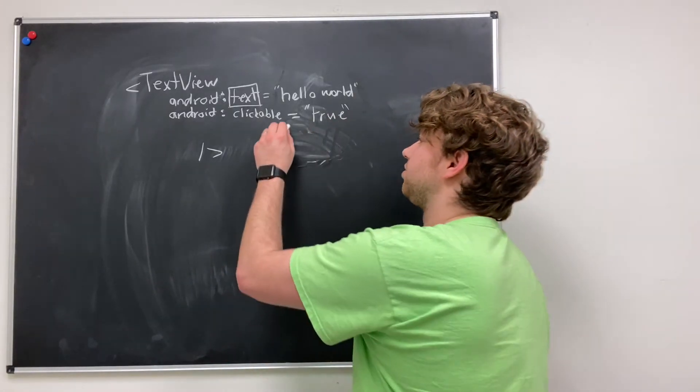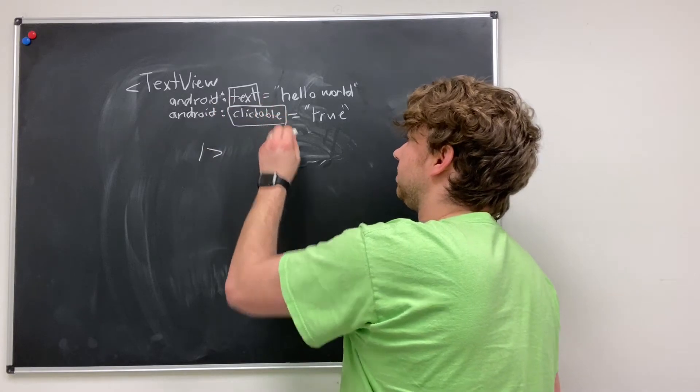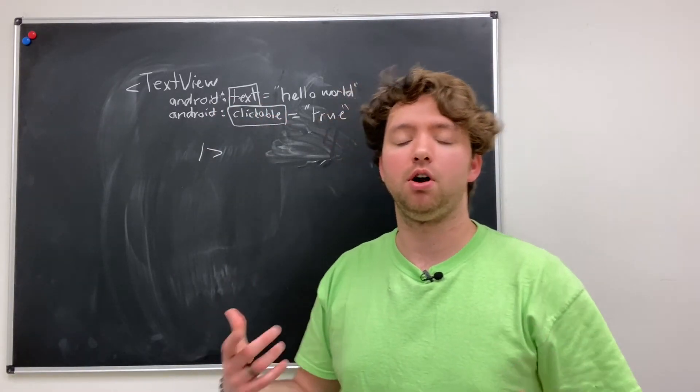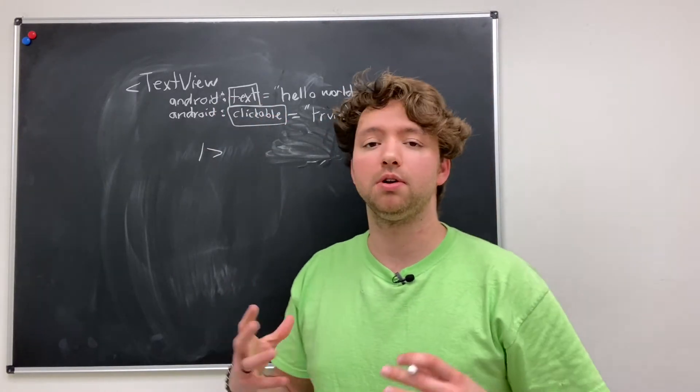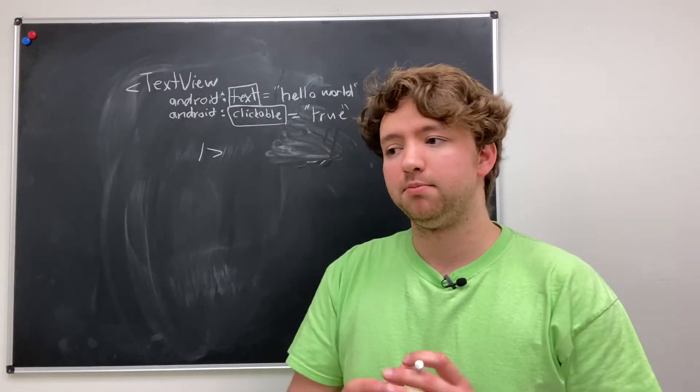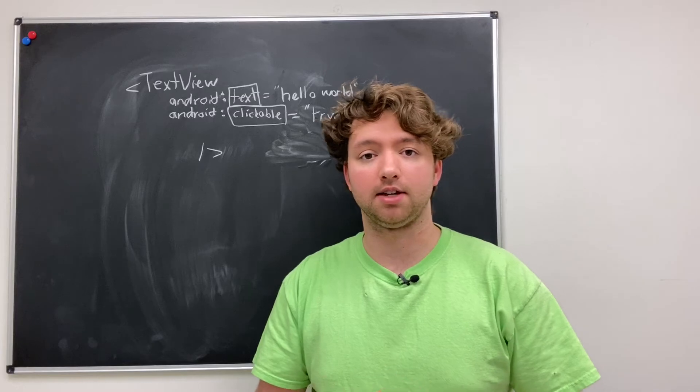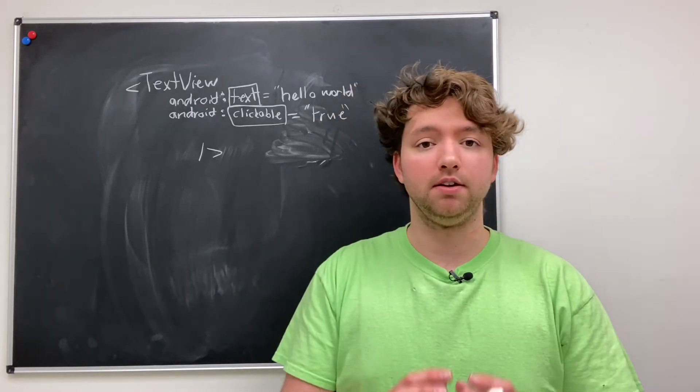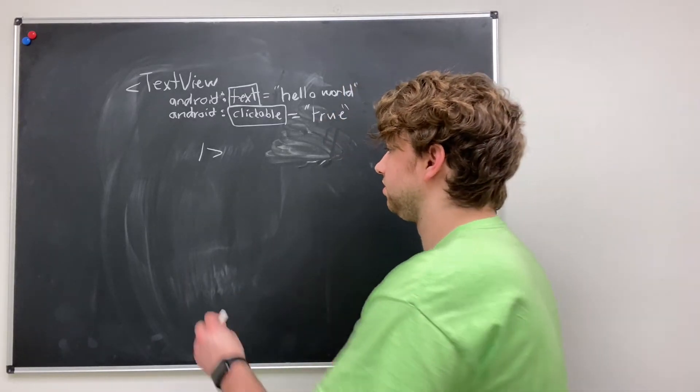So in this situation, we are setting the clickable attribute. And this is all hard-coded in the XML, and later we're going to learn how to change these values inside of the code. But for now, I just want you to understand that concept. And this is going to be independent for each type of view.